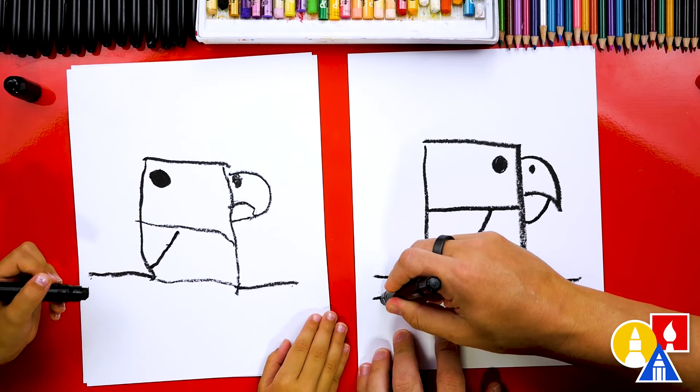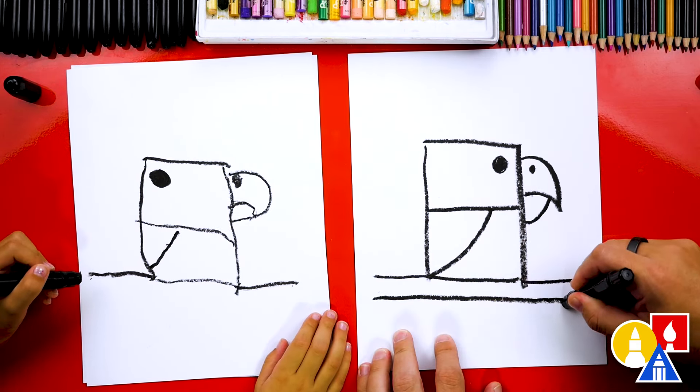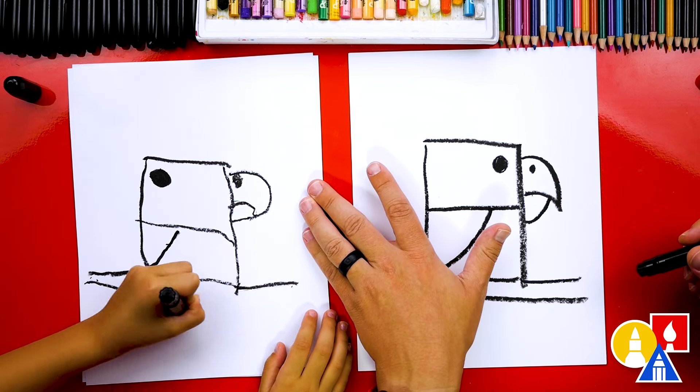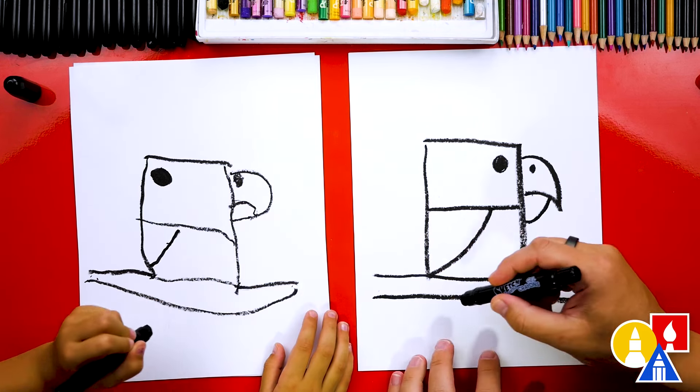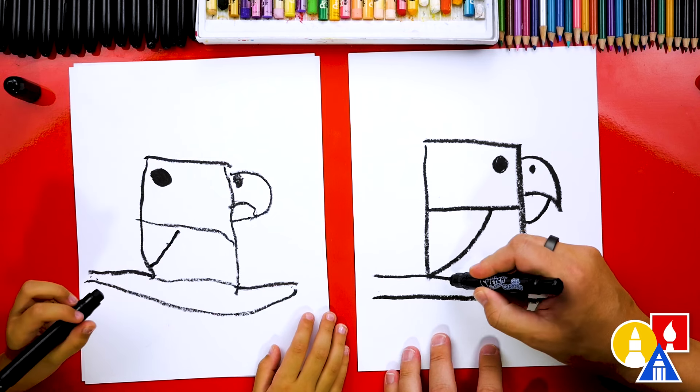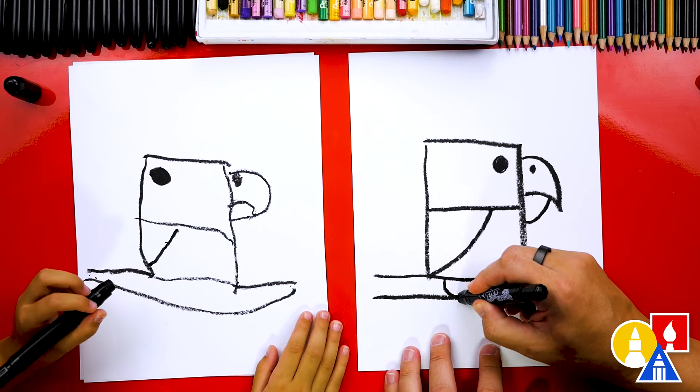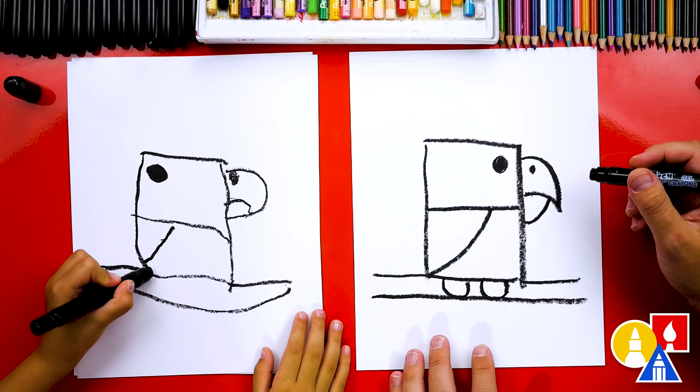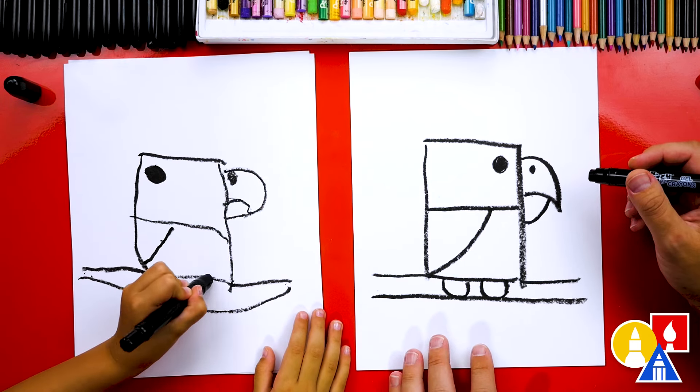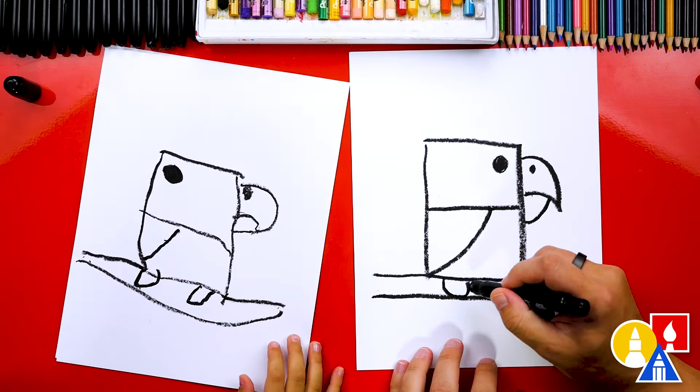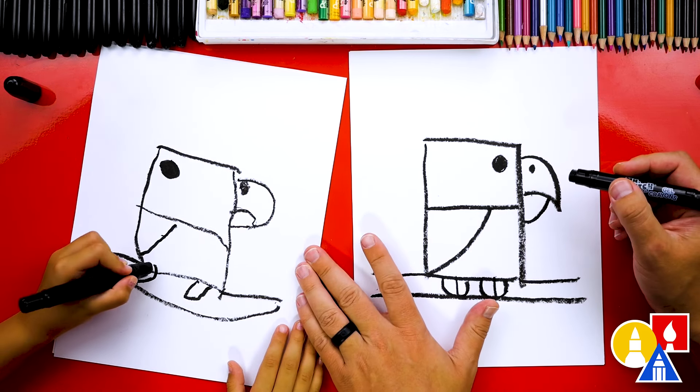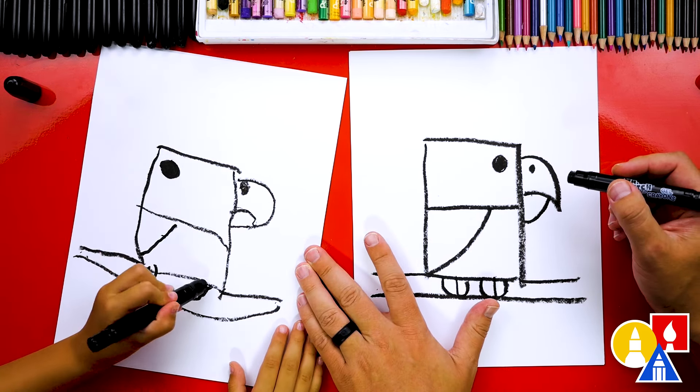There you go. Now let's draw the bottom of the branch. I'm going to draw it like this, coming across to the other side. There you go. Let's also draw the feet or the talons. We're going to draw a U-shape right here for one foot and another U-shape for the other foot. Then let's draw the toes. We're going to draw a line right down the middle of each foot. One and two.